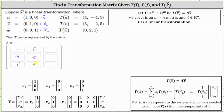And finally, since the transformation of vector w, which is e sub three, equals the vector (0, 2, 1), the vector (0, 2, 1) is the third column of matrix A, the transformation matrix. I hope you found this helpful.